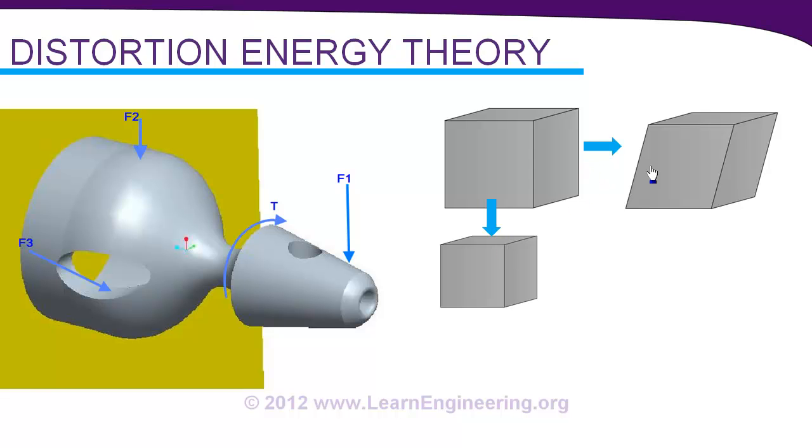And in volumetric distortion you see there is no shape change for the material but volume changes. And here in shape deformation or angular distortion only the shape changes. Volume remains same.